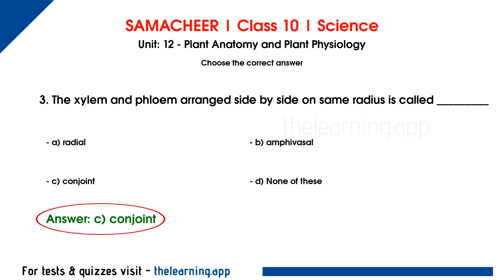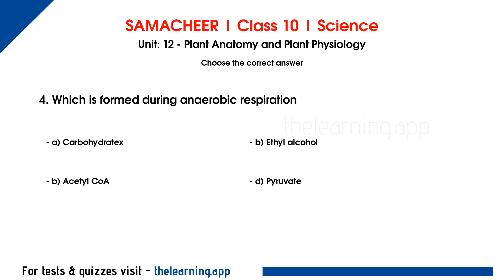In the endodermis condition, there are three vascular bundles — three types. In the conjoint type, xylem and phloem occur on the same radius.